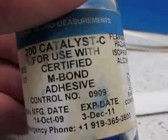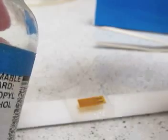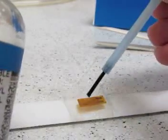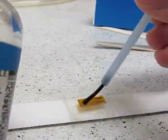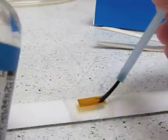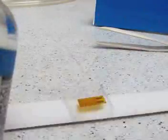So next we're gonna coat the gauge with this catalyst. It should come with the super glue. Just coat the bottom with just a real thin layer just like that.